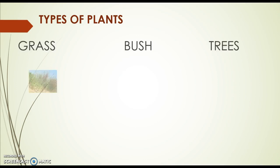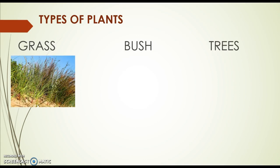Now we're going to talk about the types of plants. There are three main types of plants. First we have the grass, which is very tall, thin and flexible. It's got a flexible stem.